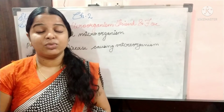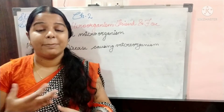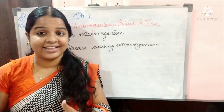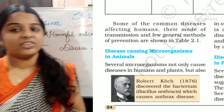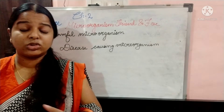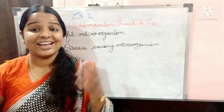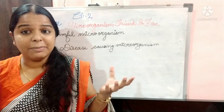Now let's go on to the topic of disease-causing microorganisms in animals. One famous disease was anthrax. Anthrax is caused by Bacillus anthracis, first discovered by Robert Koch in 1876. Just as humans get diseases, animals also suffer from diseases caused by microorganisms.